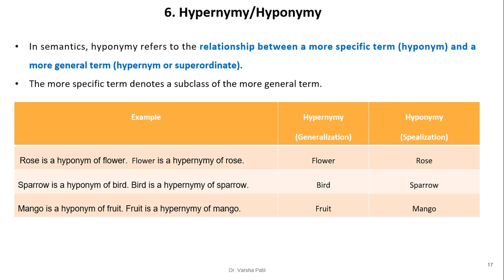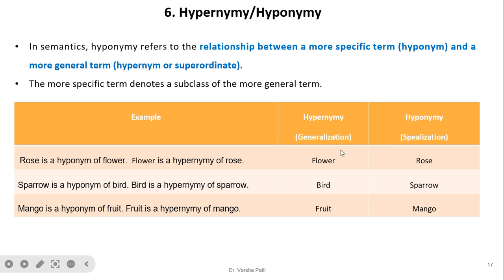Hypernymy and hyponymy: hyponymy refers to the relationship between a more specific term (specialization) and a more general term (hypernymy or superordinate). The more specific term denotes a subclass of the more general form. For example, 'rose' is a hyponym of 'flower' because 'flower' is the superclass and 'rose' is the subclass. Conversely, 'flower' is the hypernym of 'rose.' Similarly, 'sparrow' is a hyponym of 'bird,' and 'bird' is the hypernym of 'sparrow.' This information is required to be maintained in WordNet.